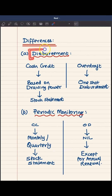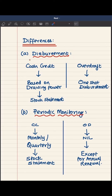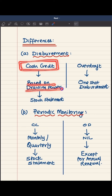The first difference lies in disbursement itself. In cash credit, disbursement will not happen just like that because the disbursable amount is calculated based on something known as drawing power, which is derived using information available in the stock and debtor statement submitted by the borrower.